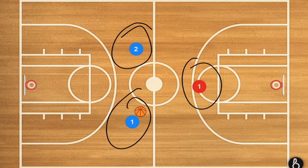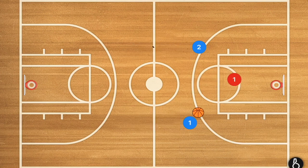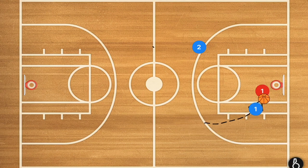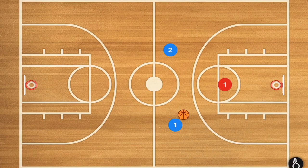First we're going to start with a two-on-one situation. There are a few different options that you have. Obviously there is the basic, which is player one just attacks the rim, and if player one tries to cut him off he can just pass over to player two. That's a basic option and that is what most players generally do.